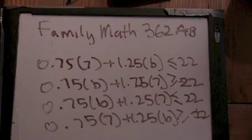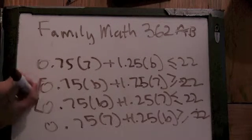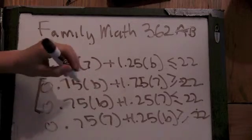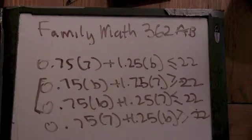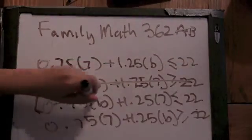All right, well, these two choices don't even make sense. Why not? Because B is the number of bottles, and 75 cents is the cost of the gum, not the bottles. So we can cross these off.